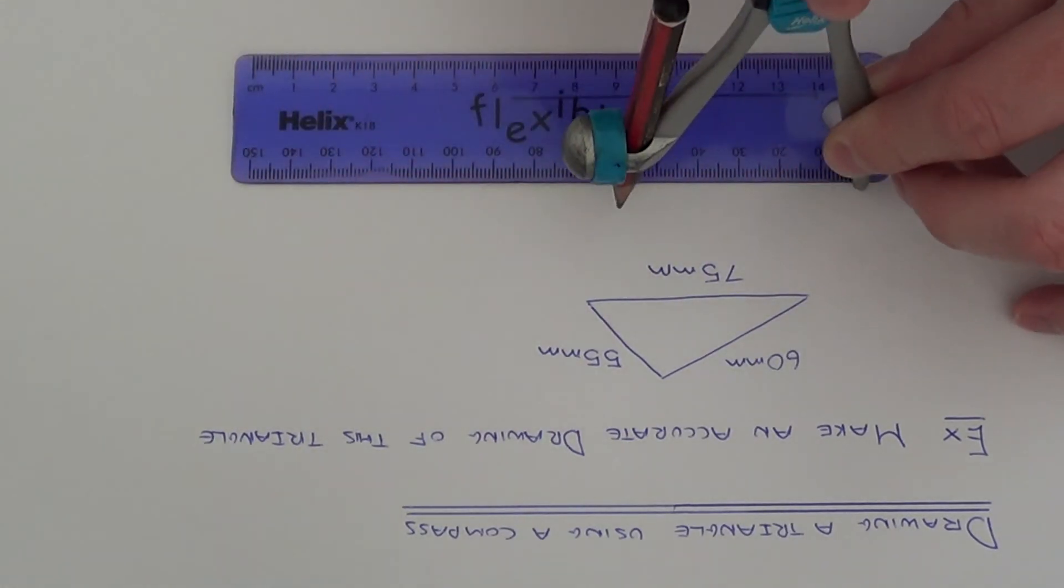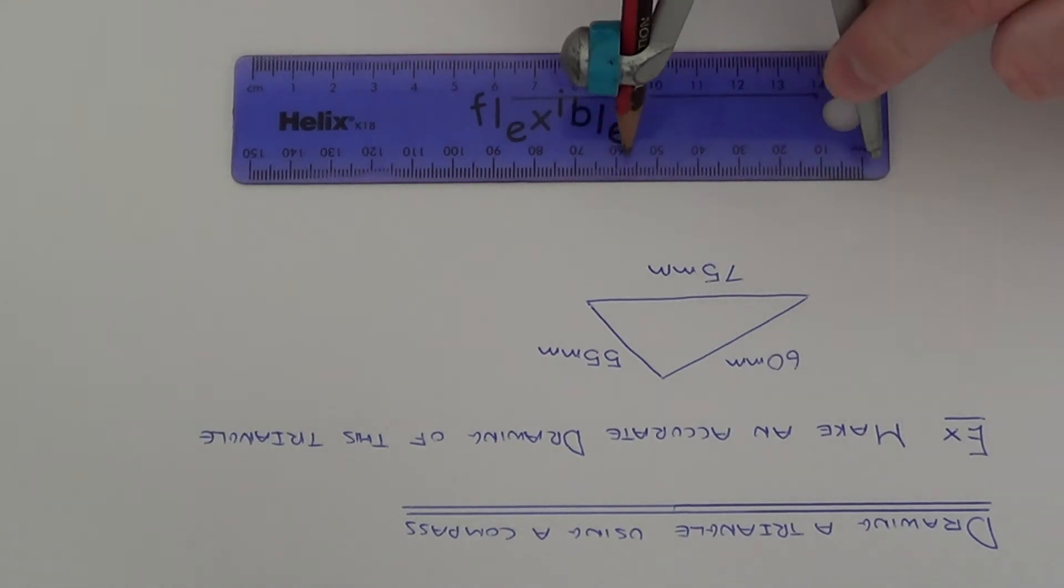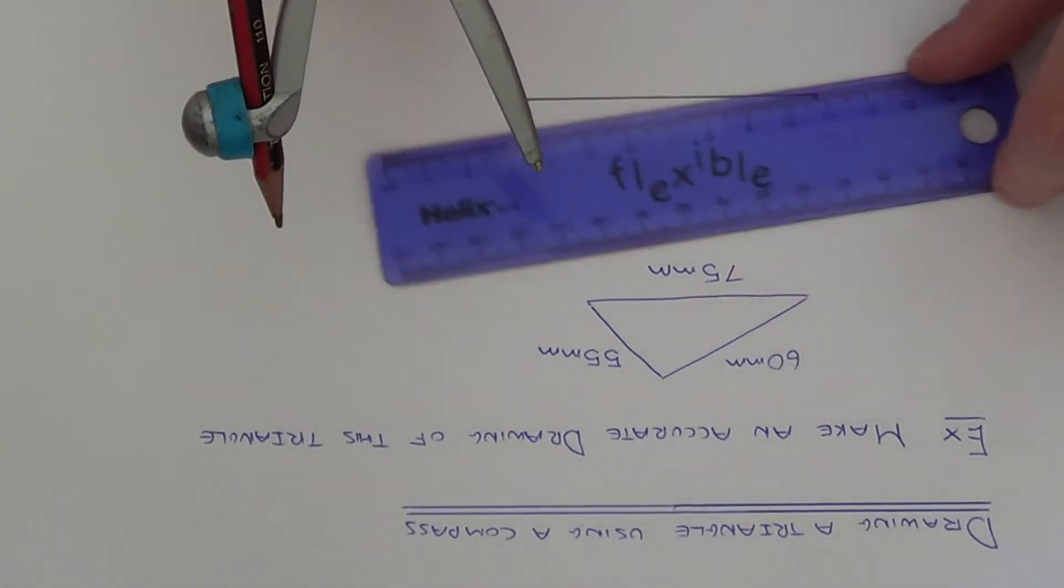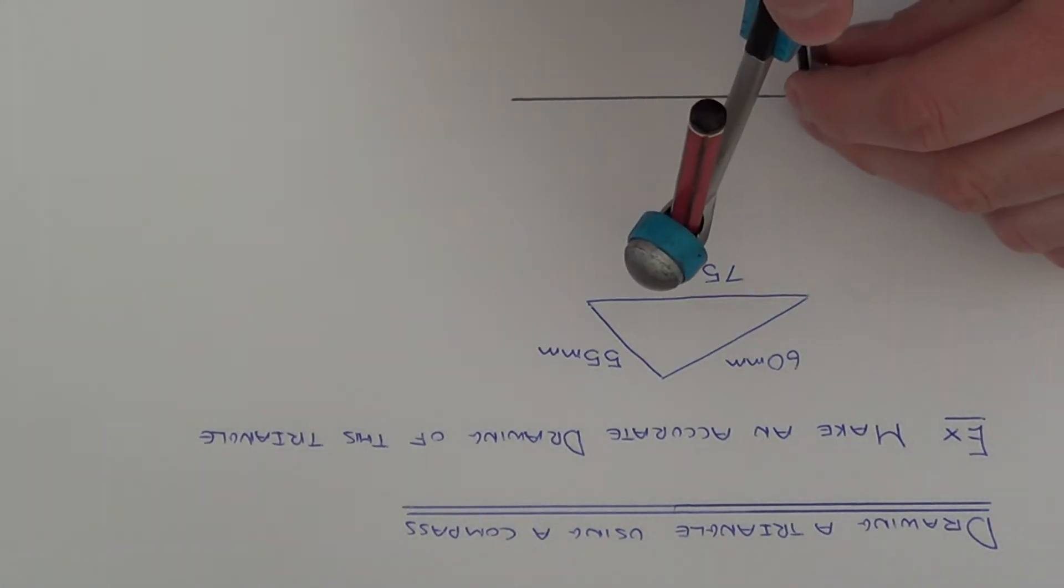Which is here. If you just put your compass up against your ruler, you can see I've opened it to 60mm. And from the left hand side of the line, draw an arc.